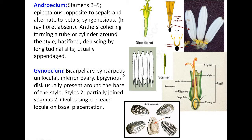Gynoecium: bicarpellary means two carpels; syncarpous means carpels are attached to each other; unilocular — a single locule is present. Ovary is inferior — inferior ovary means calyx, corolla, and androecium are present above the ovary. An epigynous disc is usually present around the base of the style. Style is two, partially joined. Stigma is two. Ovule is single in each locule with basal placentation — the ovules are attached at the base, and this basal placentation is found in family Asteraceae.